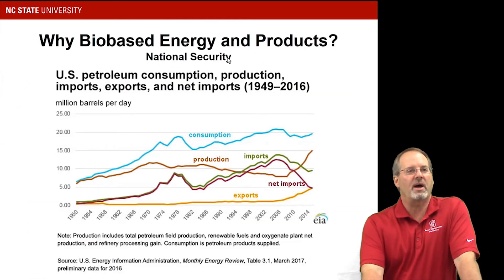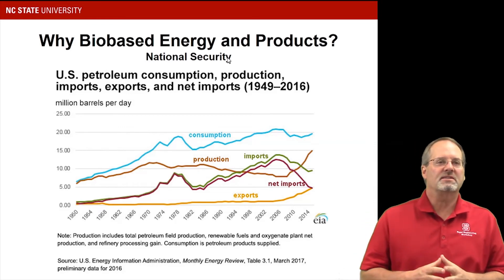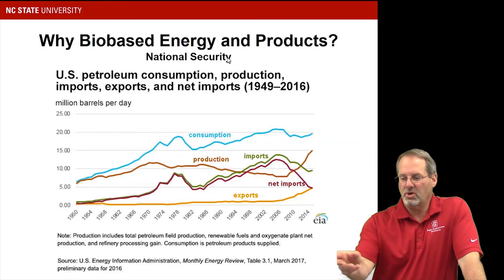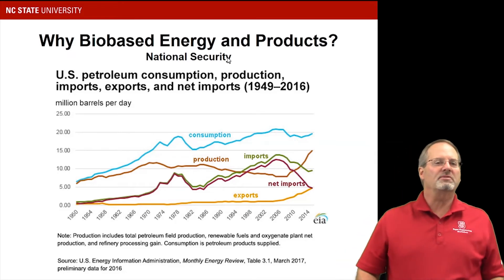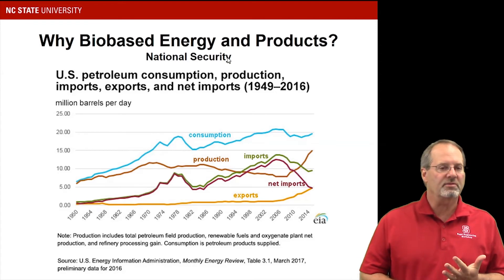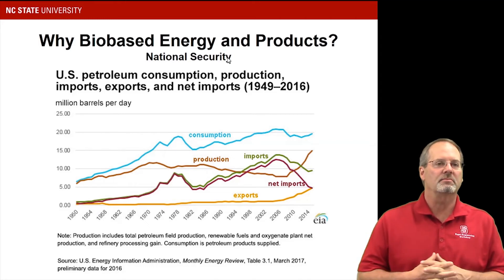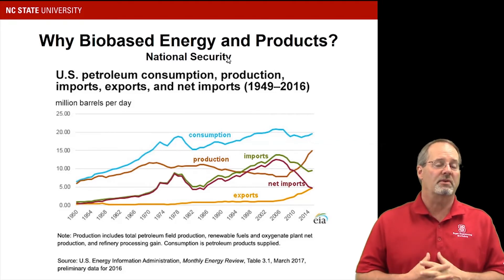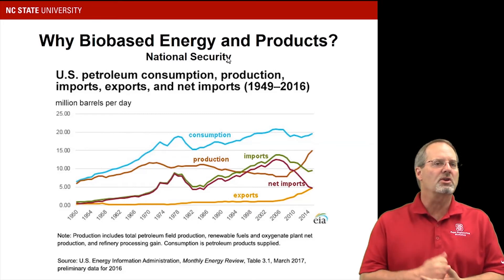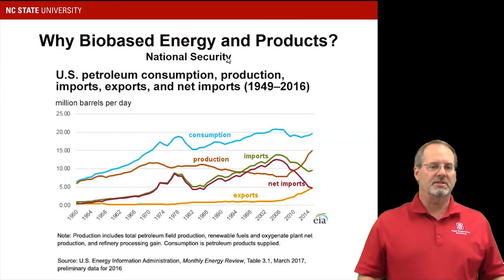Another reason to use bio-based energy and products is national security. The United States consumes about 20 million barrels of oil per day, and as shown in this graph, we have to import almost half of that. During times of conflict, weather problems, or other disruptions, we may not have enough oil to import for all our needs. It would be great to be secure in our energy needs internally for better control during troubling times.